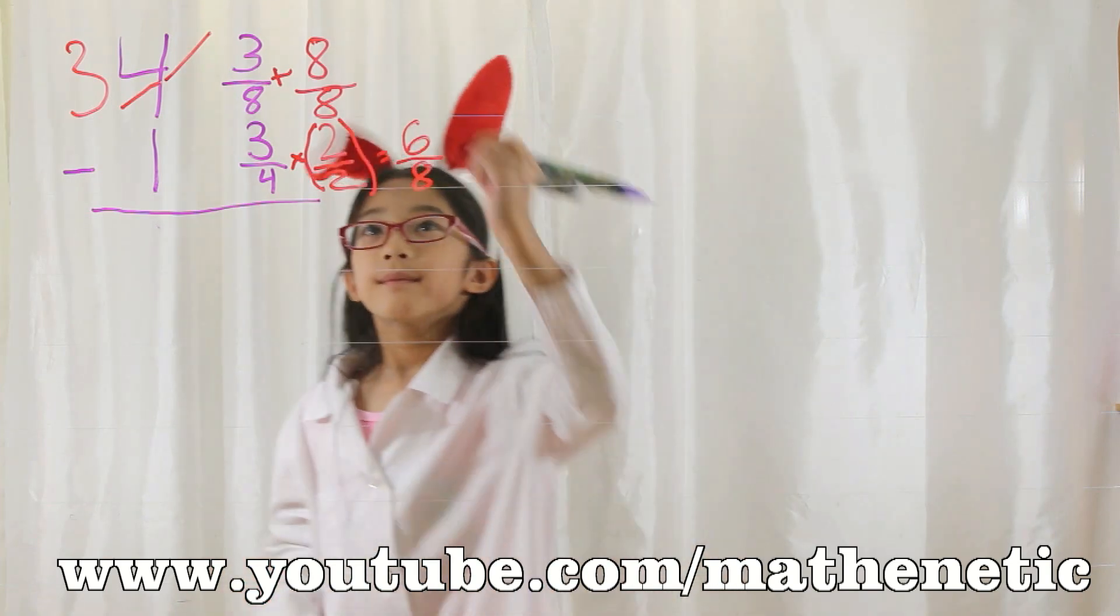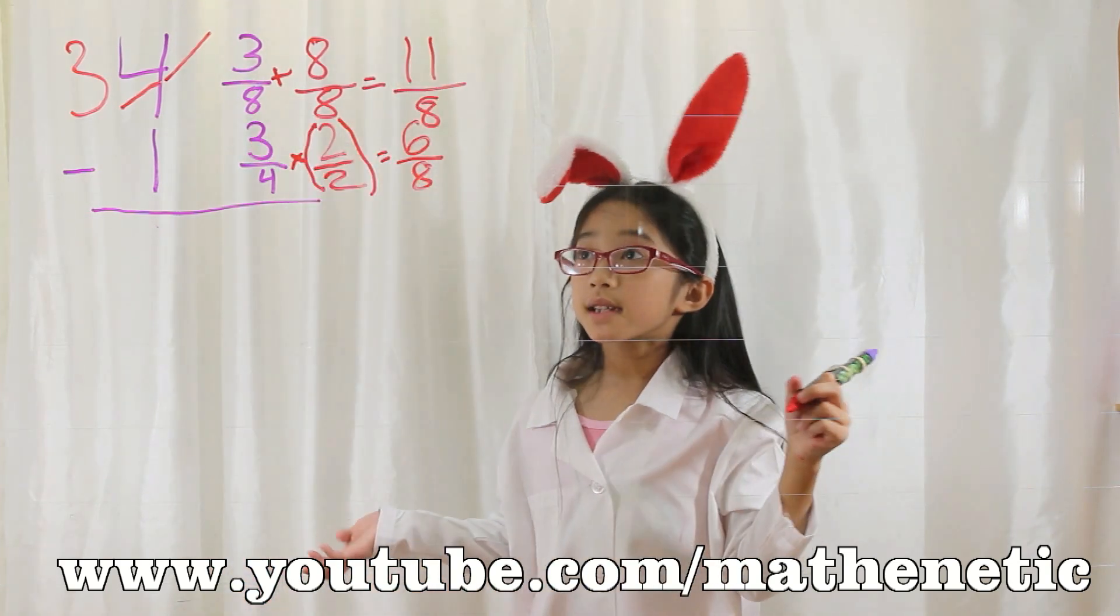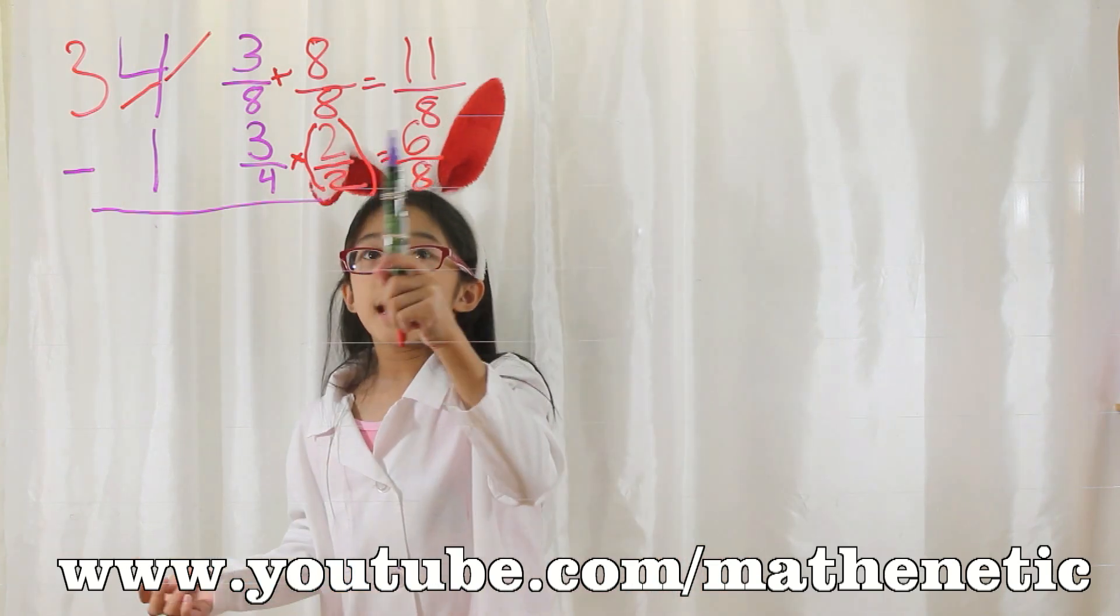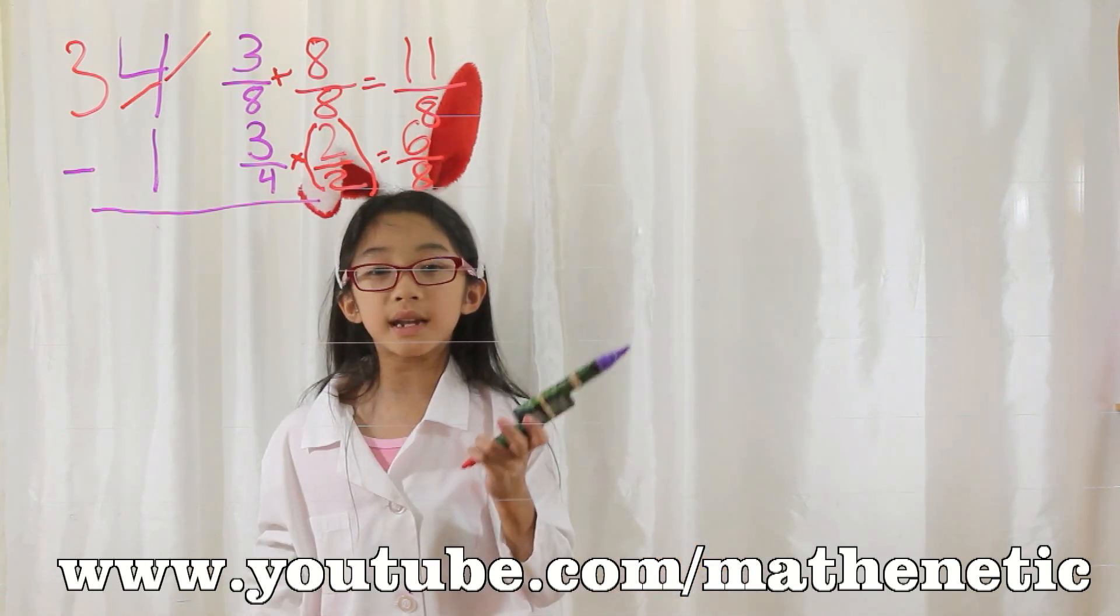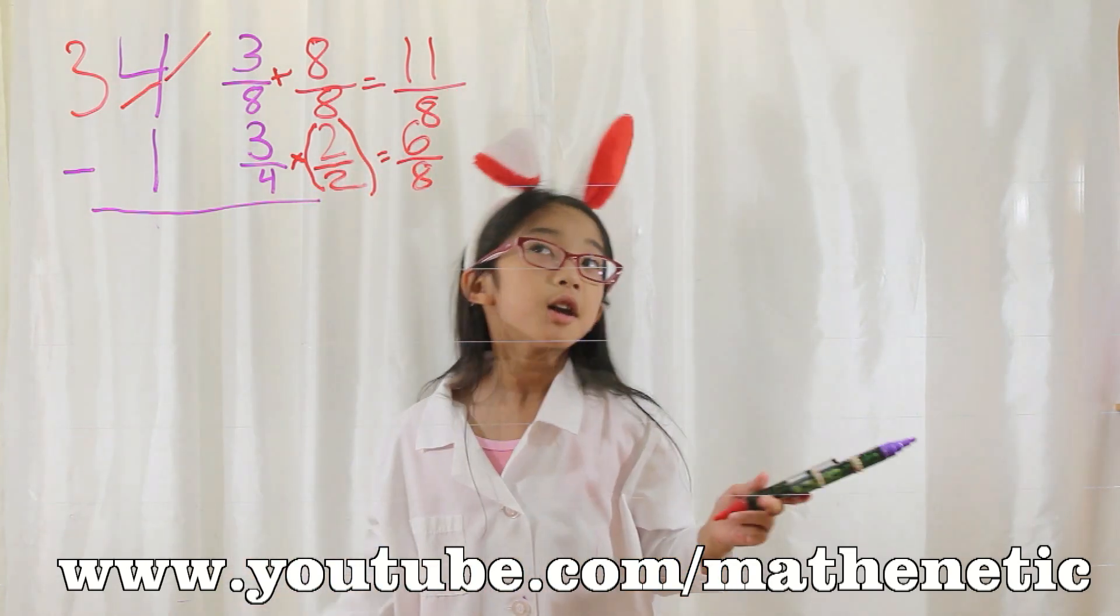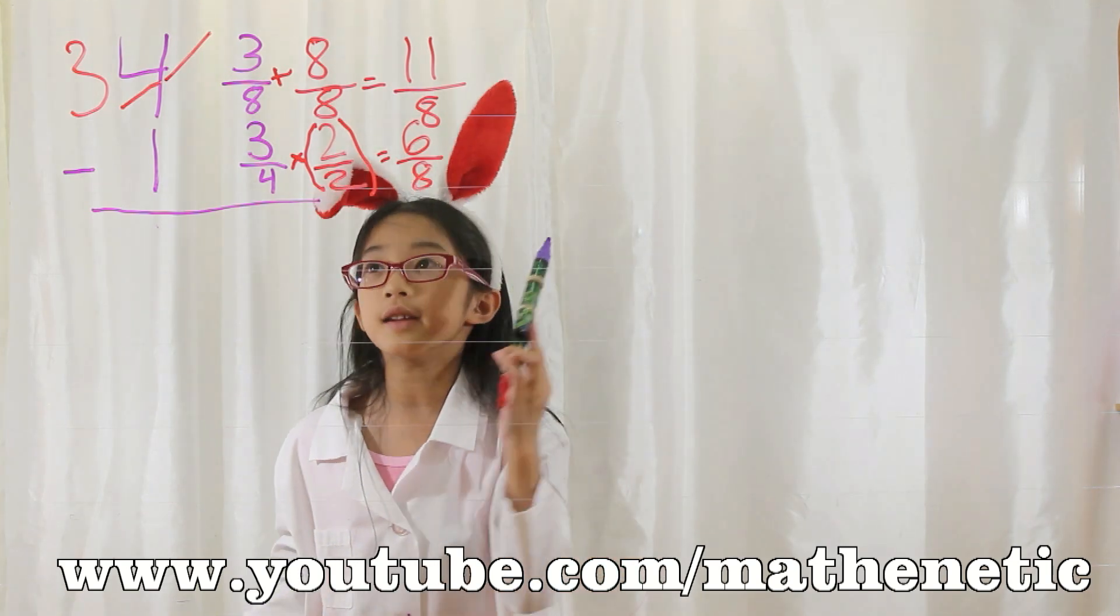Okay, let's add. So as you can see here, 3 plus 8 equals 11. We just added the numerators, and we didn't add the denominators because it was a common denominator. So therefore, we came up with 11 over 8.